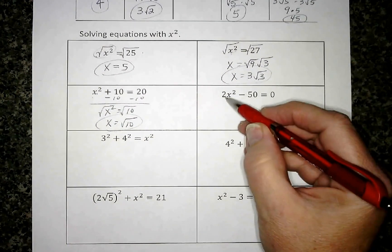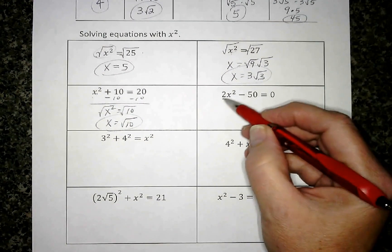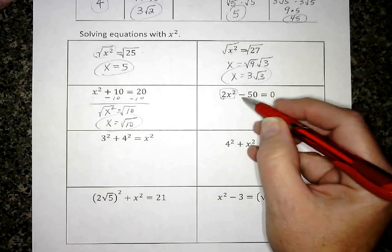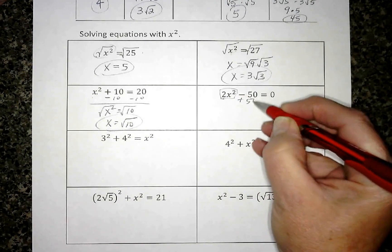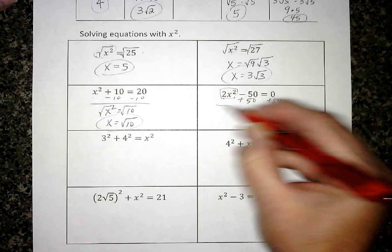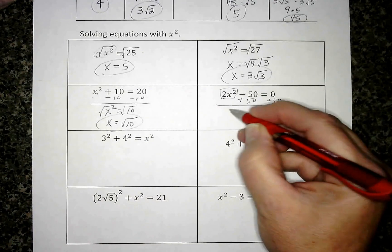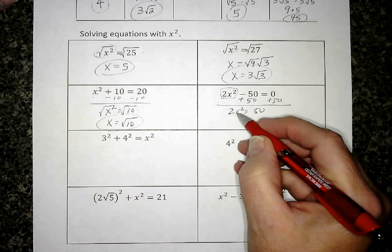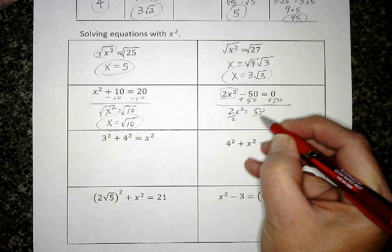This one, because we have a number in front of the x² - this is the term we want to get by itself - so I'm going to add 50 to both sides to get rid of that. So 2x² = 50.